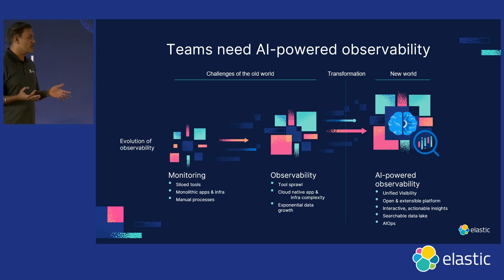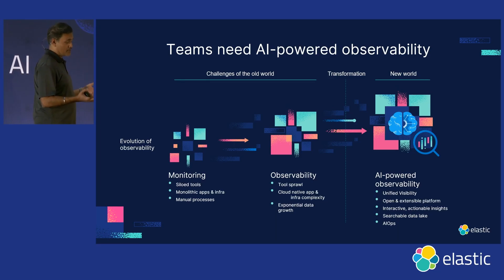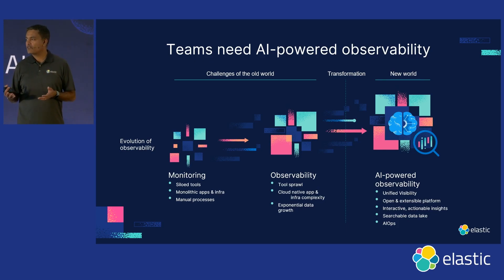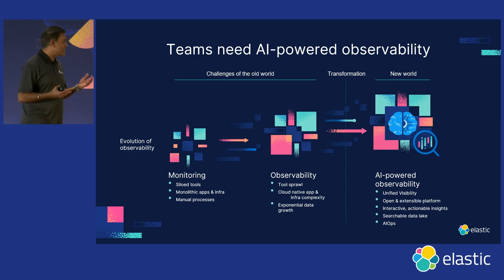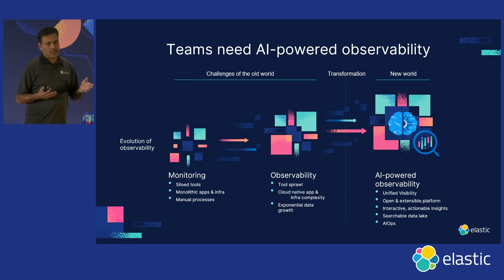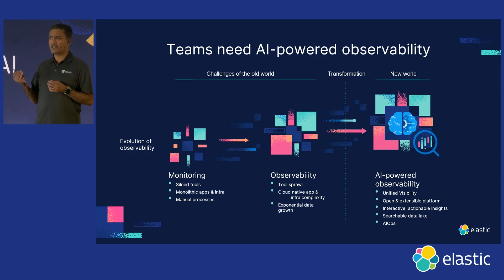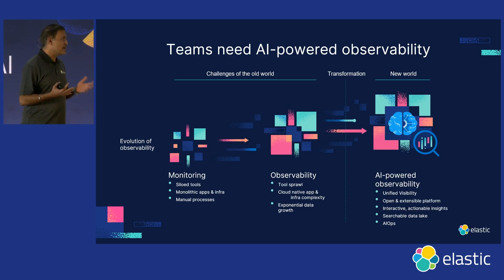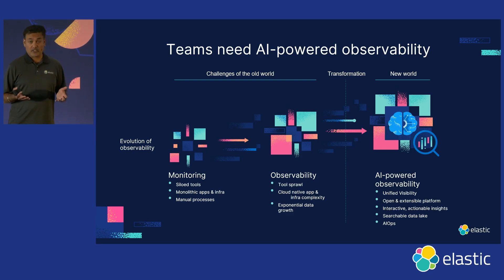You've heard about monitoring. When data centers were in existence, there was a lot of manual siloed effort around trying to collect data and being able to solve these problems manually. But once you had the advent of cloud, what that did was it abstracted the different layers — whether the infrastructure layer, the application layer, the services, and so on — which made it really, really hard to solve problems. And so the industry evolved into observability, which is being able to bring all the signals together: metrics, logs, and traces. So that was an inflection point.